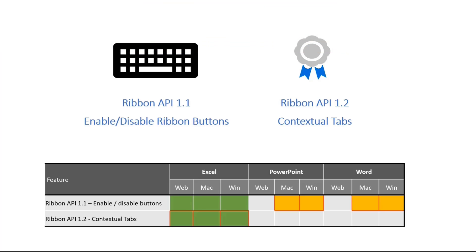Previously, Enable/Disable was already available on Excel Web, Mac, and Windows. It is now also available on PowerPoint and Word for Mac and Windows on desktop. And contextual tabs is now fully available for GA on Excel.